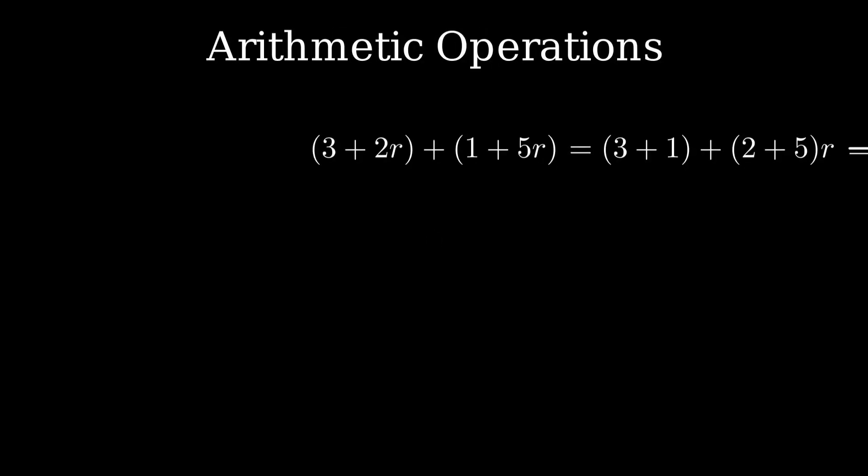Let's try addition. Adding 3 plus 2r and 1 plus 5r, we add the constants and the r terms separately, giving 4 plus 7r. Evaluating that gives 4 minus 7, which equals negative 3.